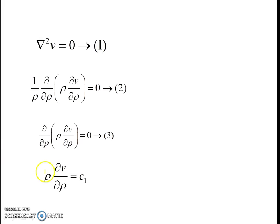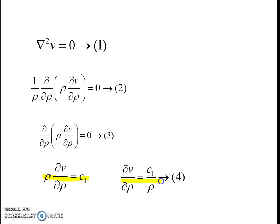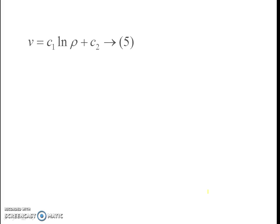Integrating equation 3, we get rho * dV/d_rho = c1. Rearranging gives equation 4: dV/d_rho = c1/rho. Integrating equation 4 with respect to rho again, we obtain V = c1 * log(rho) + c2.